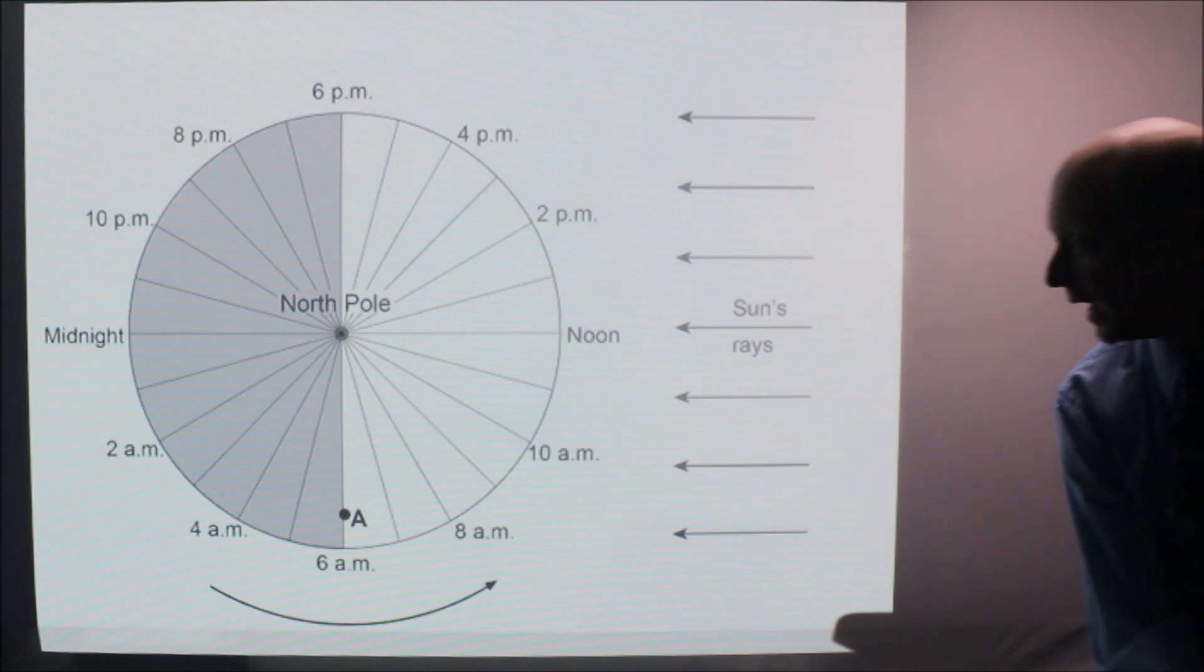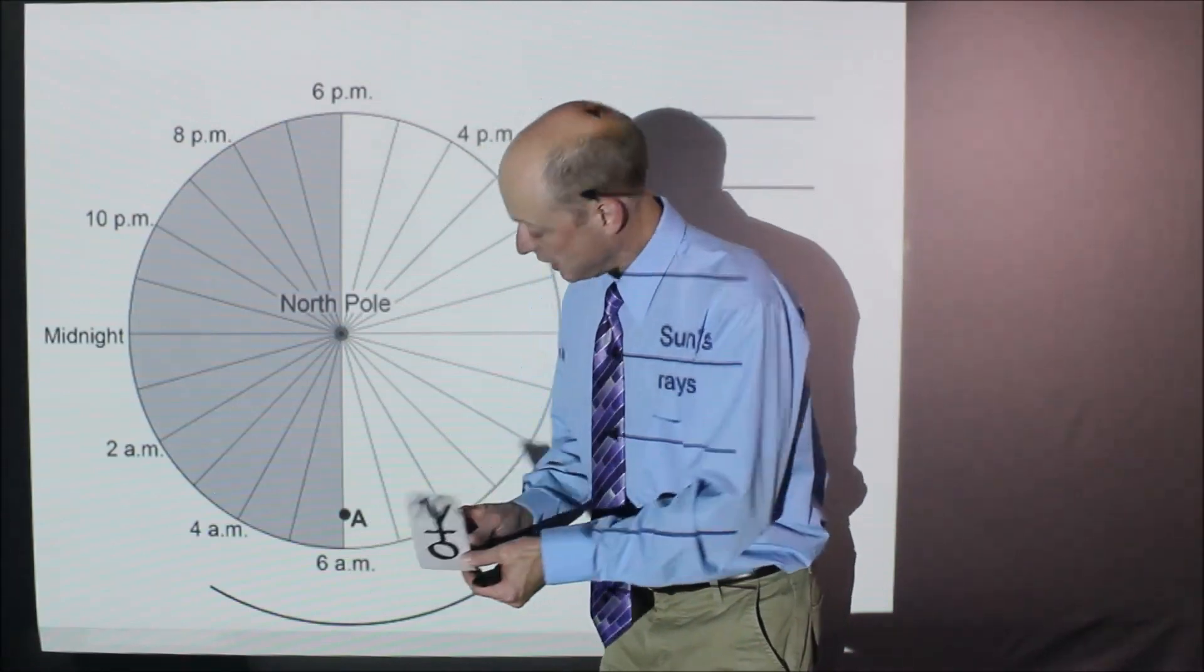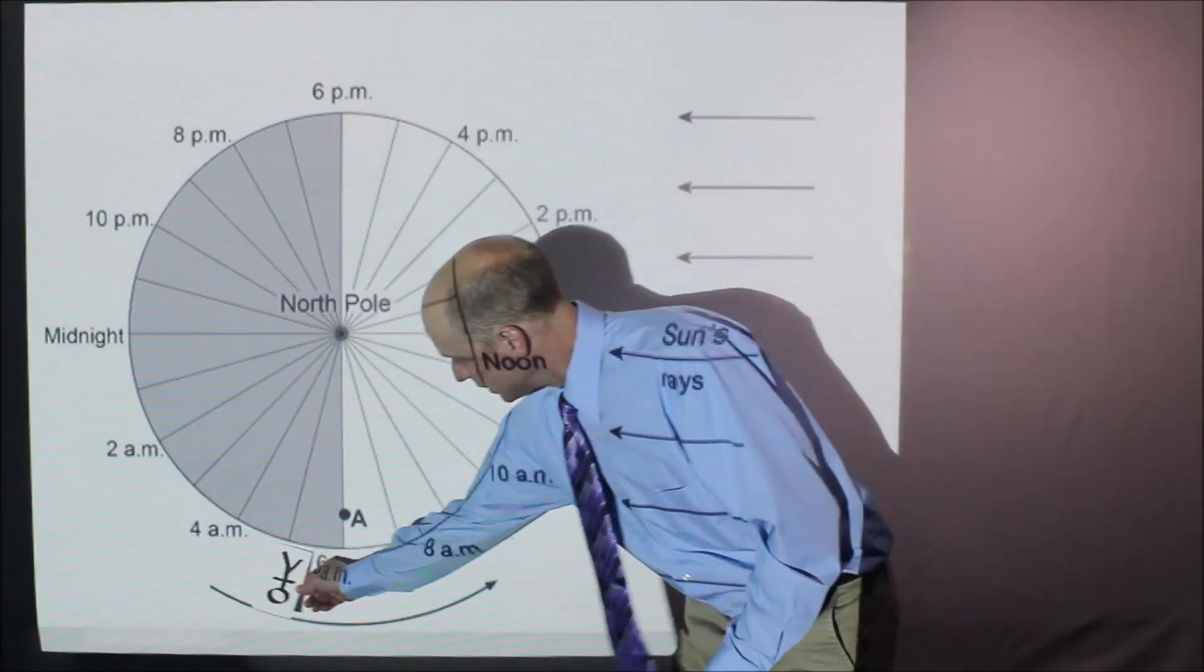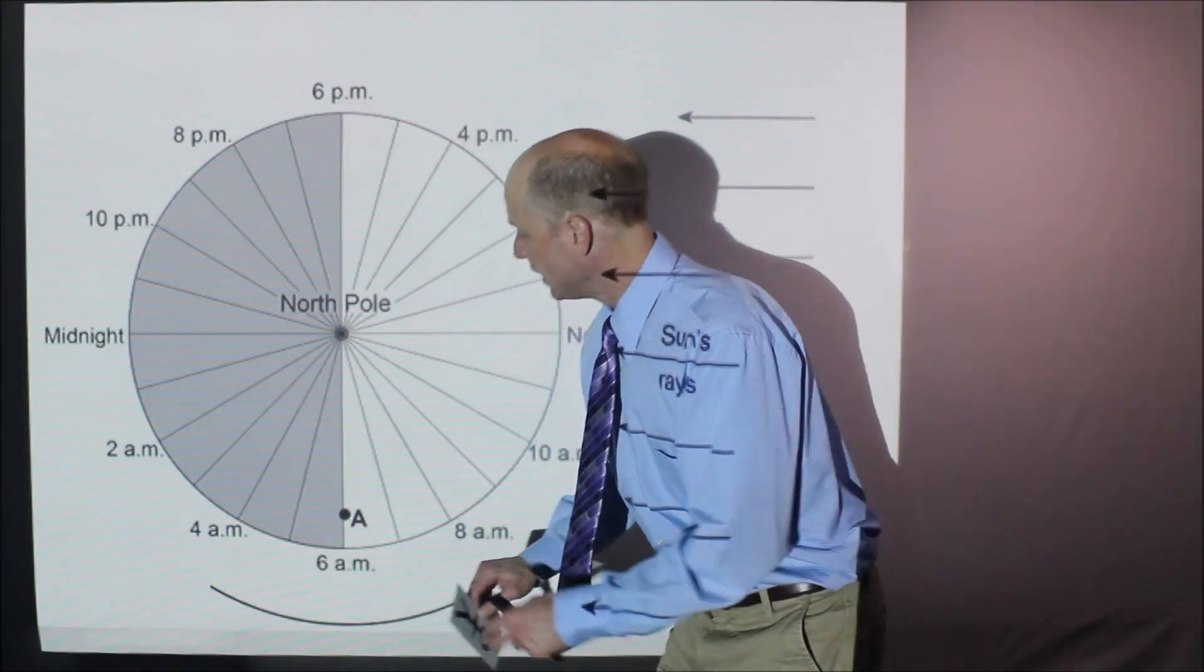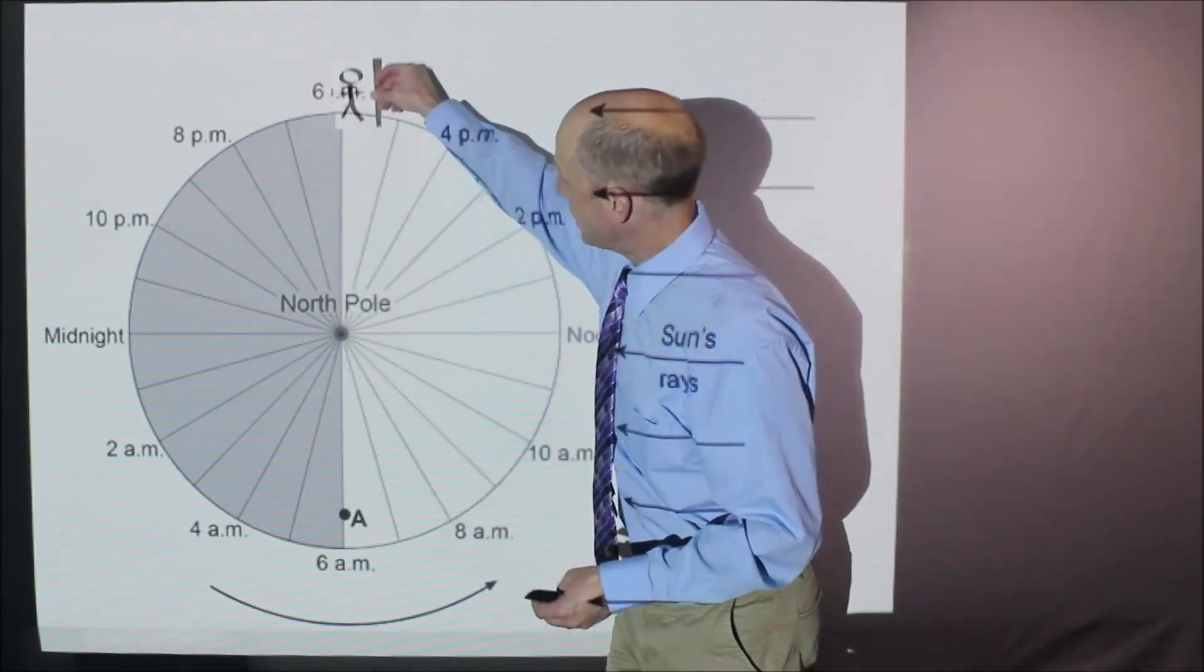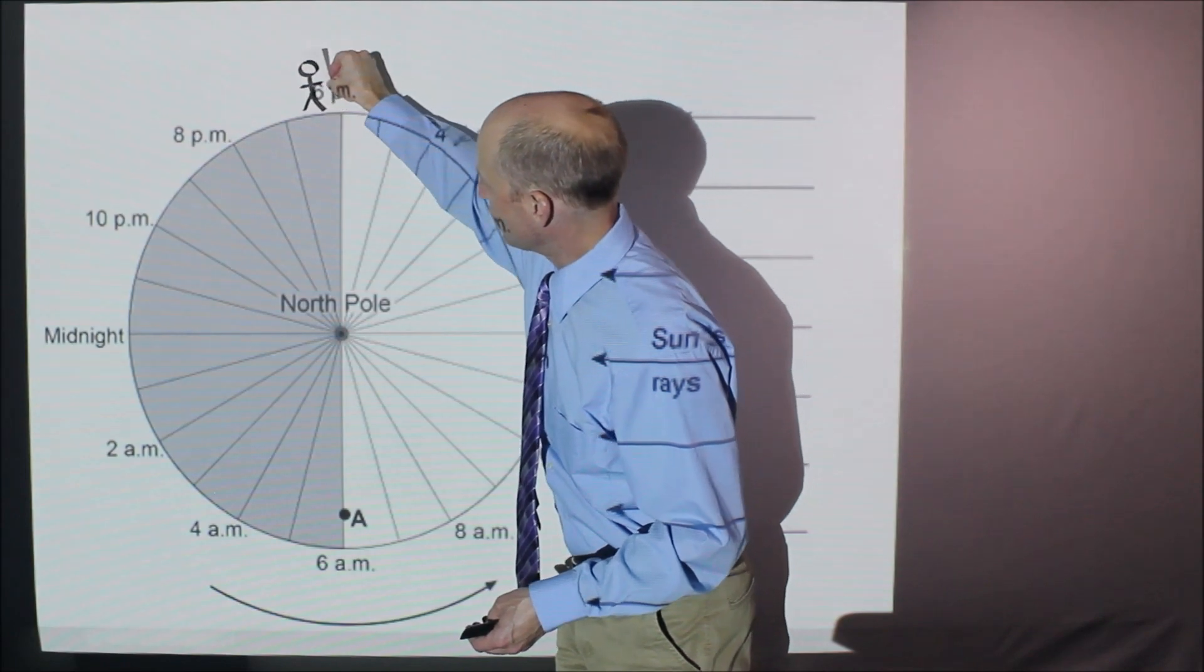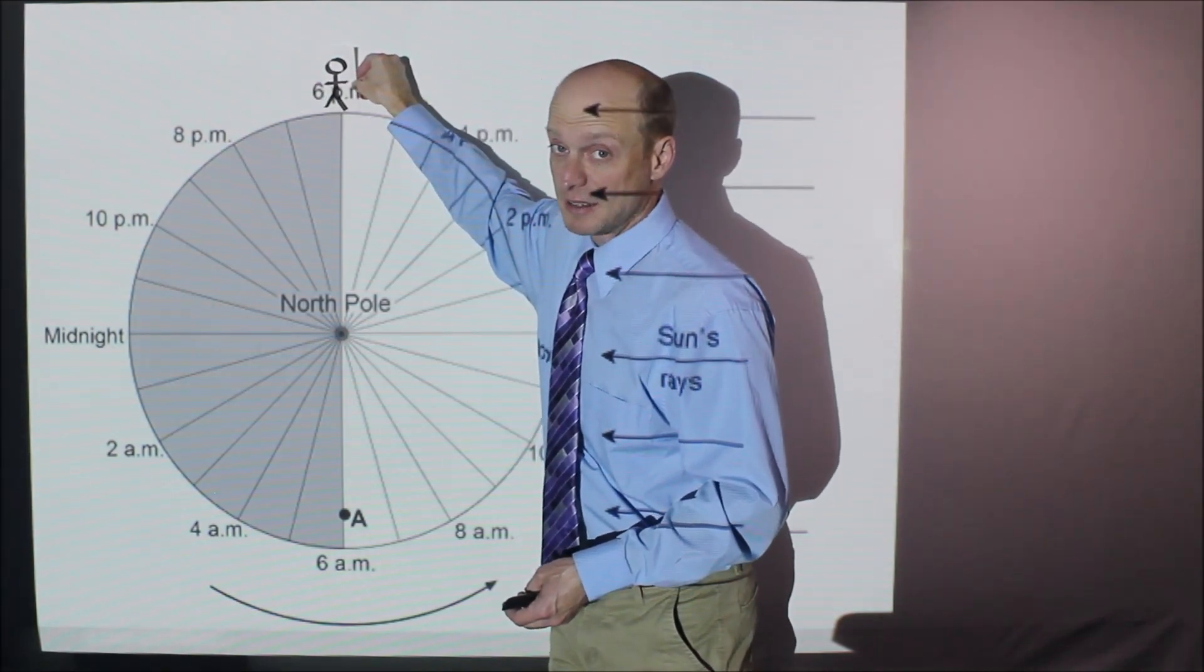But the key thing is that right here, if you're someone and you're right there, that the rotation, they're rotating into the light. So they're experiencing sunrise as opposed to at the same exact moment, these people on the other side of the Earth, they're rotating this way. They're right here, they're experiencing, they're rotating into the dark, they're experiencing sunset.